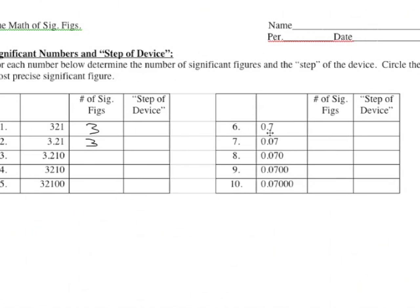Here all the decimals are present, so you're going to ignore zeros starting from the left and count everything else. And in this column, the decimal is present, so you're going to start from the left and count. Here come the answers — see how you did. Present: start from the left, ignore the first two zeros, count one, two, three, four.